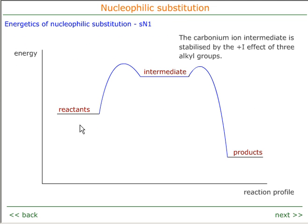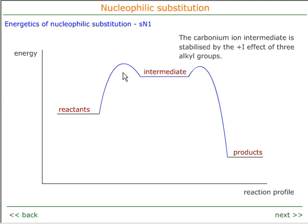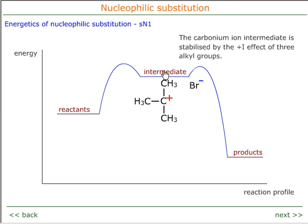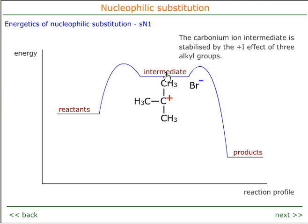Looking at the energy profile for this mechanism: first the reactant must break apart to give the intermediate, requiring an activation energy over this first hump to reach the intermediate. The intermediate then requires relatively little activation energy to proceed to the products. This intermediate has a real identity because it is stabilised by three alkyl groups — the full positive charge is spread out by the positive inductive effect (+I effect) of the three alkyl groups, weakening the positive charge and stabilising the carbonium ion.